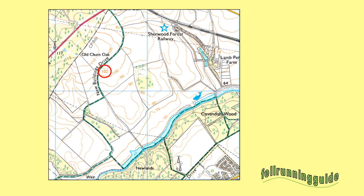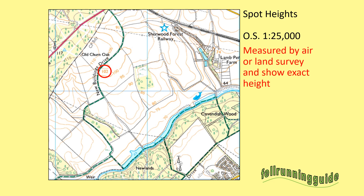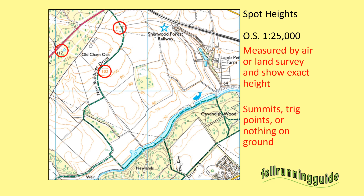So you remember that 102 height shown earlier? Well, it ends in a 2, not a 0 or a 5, so it can't be a contour value. So what is it? It's what we call a spot height. Spot heights are precise locations that have been accurately surveyed — known heights above sea level shown on the map. They may be summits or trig points, but they might also be just locations where there's nothing to see on the ground. You can see a trig point, and a couple more spot heights: 64, 74, 91, 102. The 64 is shown in black, while 74, 91, and 102 are in orange, and the 117 trig point is black. Air surveys are shown in orange, whereas land surveys are shown in black.